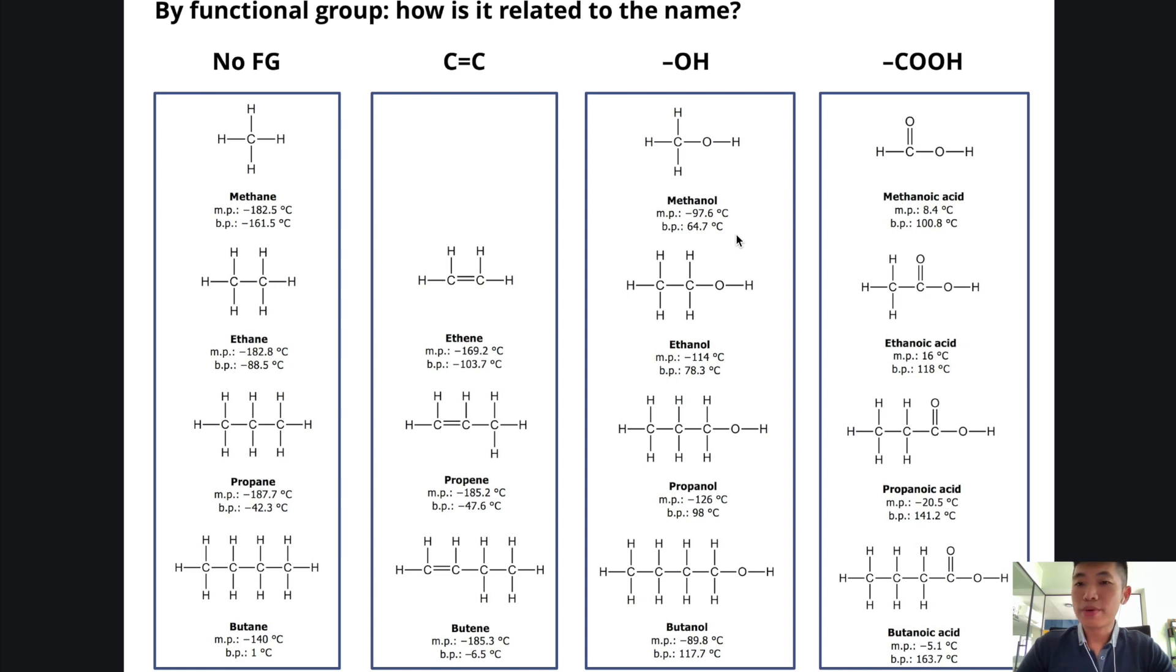One of the more common ways students sort the cards based on my experience would be as such. Students will observe that there are some patterns in the name, and they will group those with the similar kind of naming in the same category. Do you manage to come up with something like this? If not, we will go through some other ways of categorizing later. This is just one way by the naming. And the naming of the molecule is actually related to its structure.